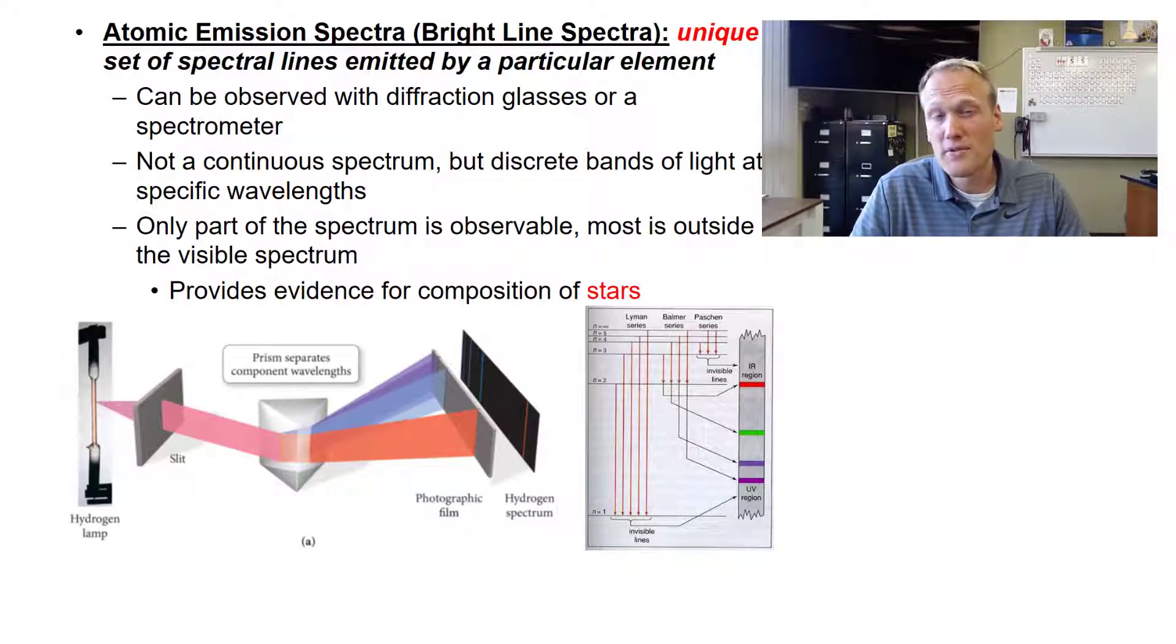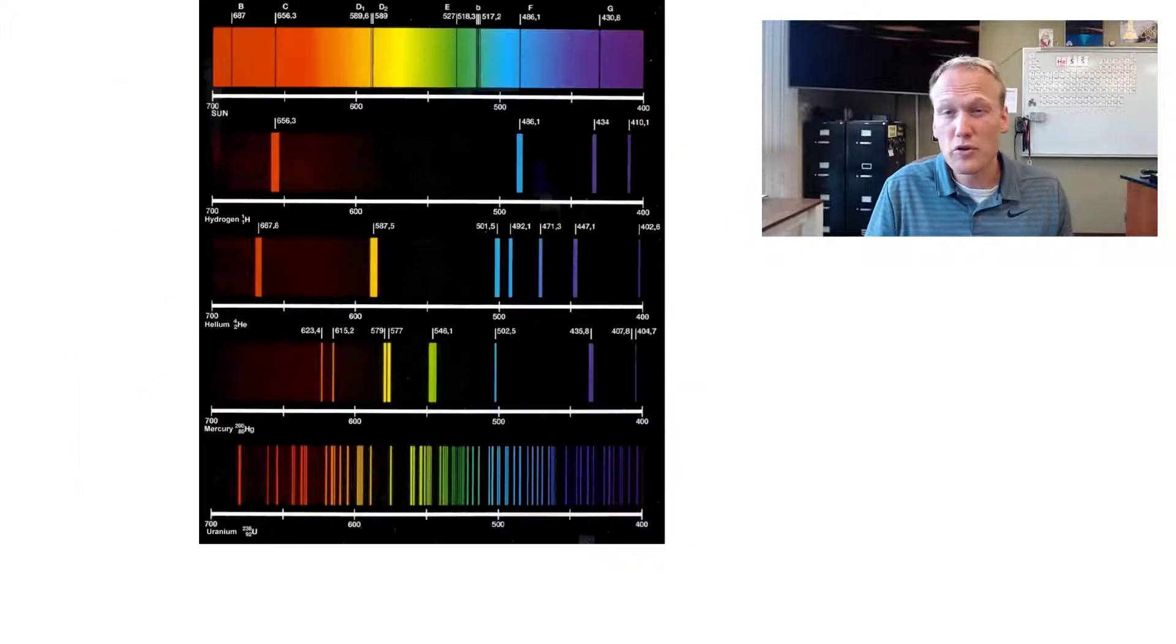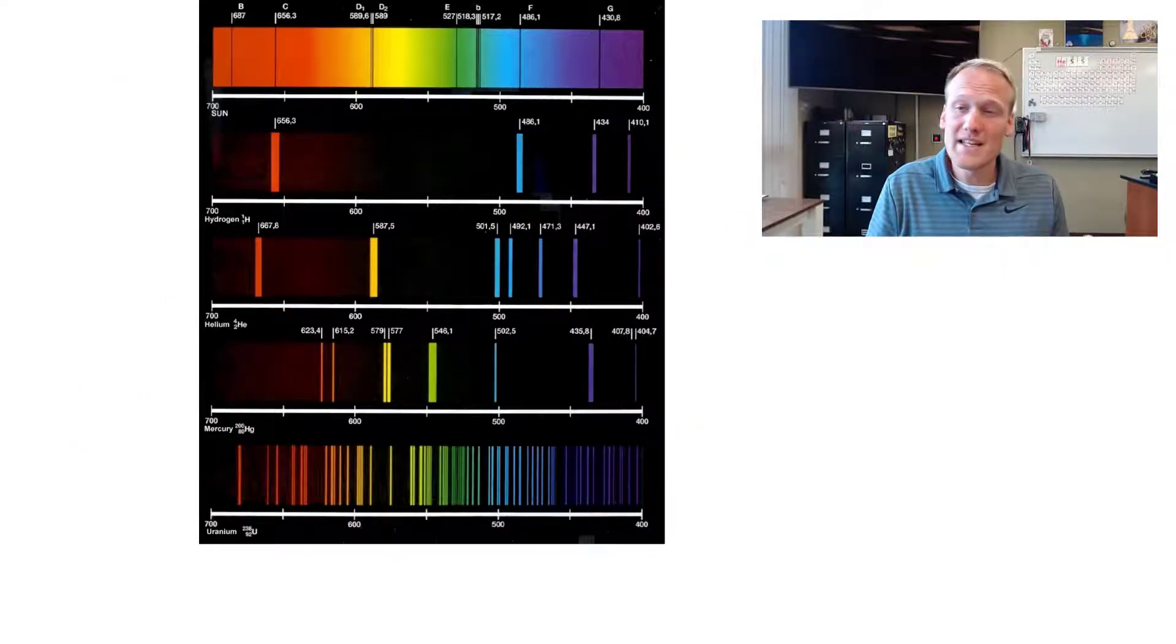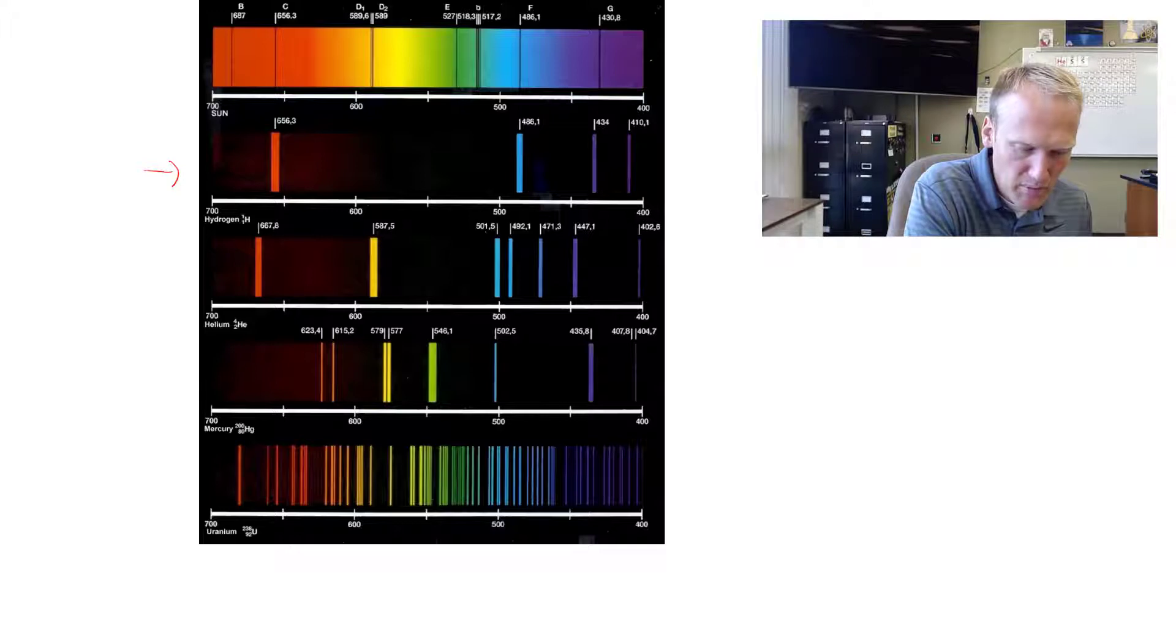One way we can observe this is through a spectrometer. A spectrometer is basically like a prism that shows us the different wavelengths a source is emitting. In class and in lab, we will demonstrate different atomic emission spectra. But if you look right here, this gives you an idea of different elements and their different spectra. Here is hydrogen, and you can see there's a red spectra and some blue and purple.